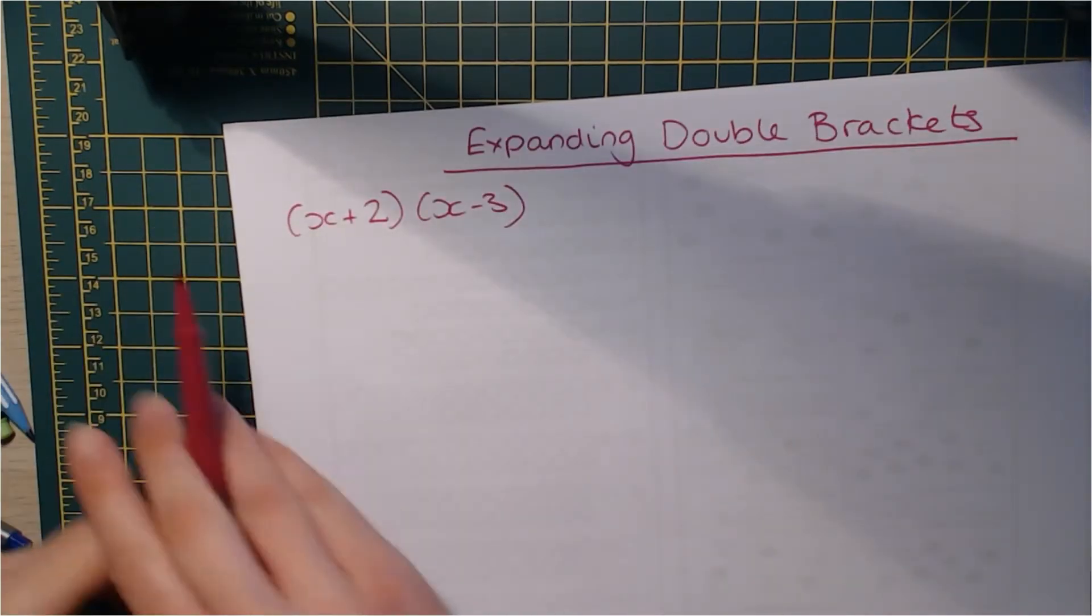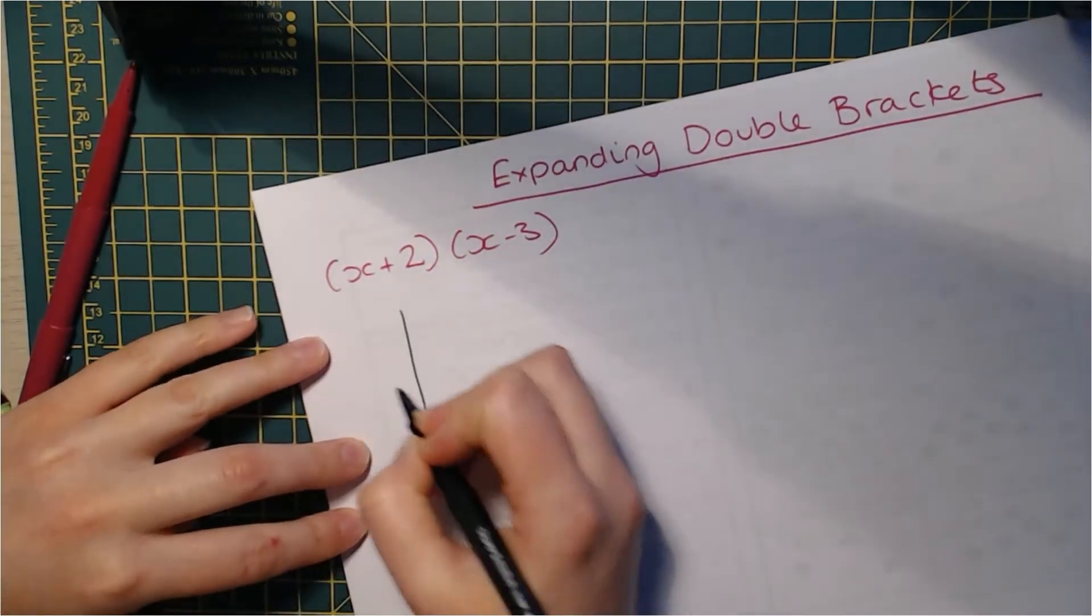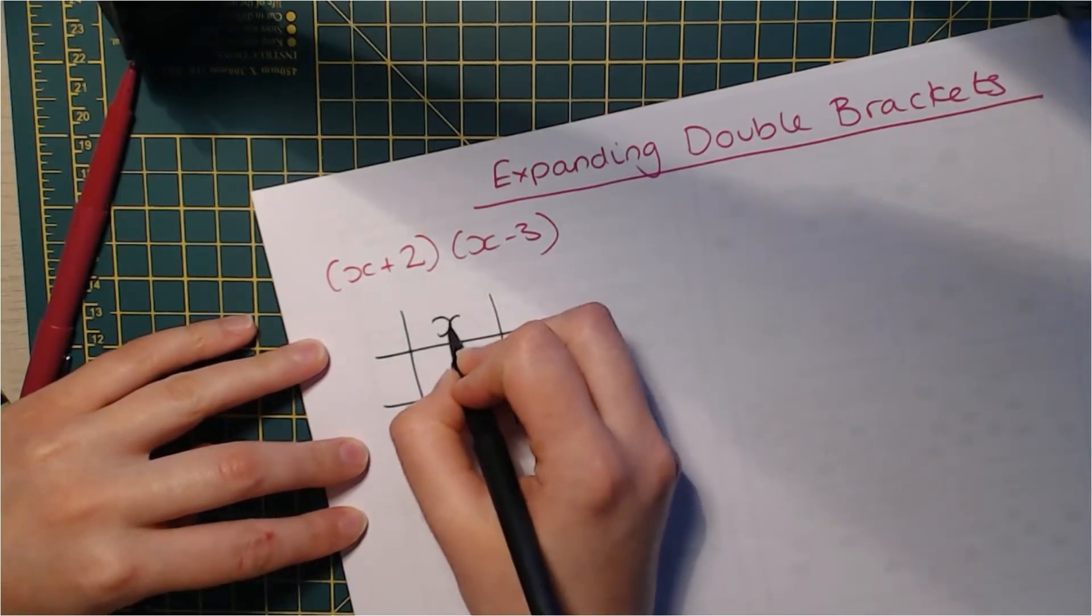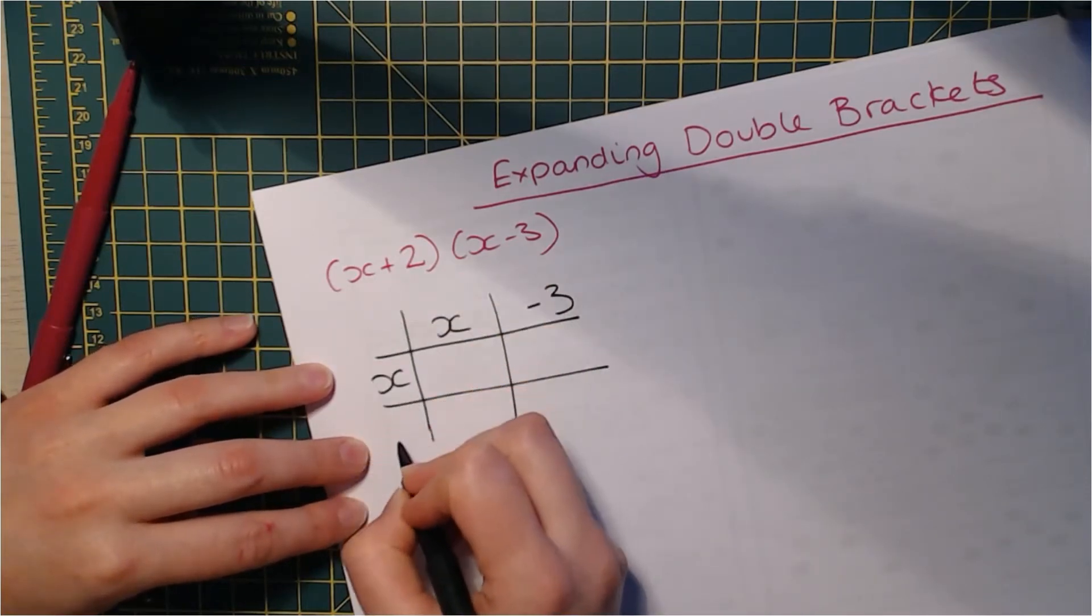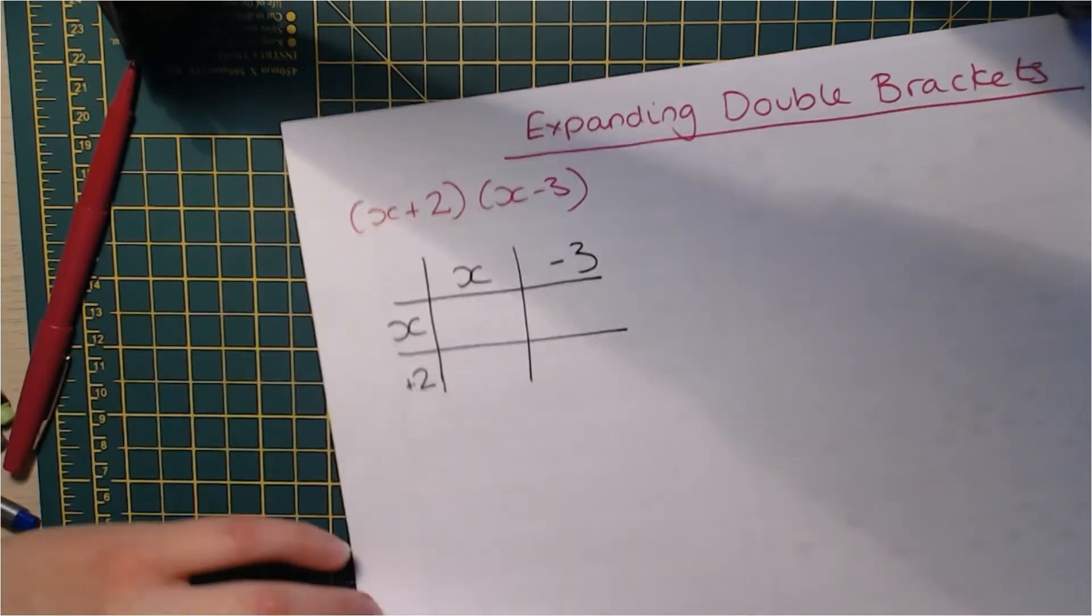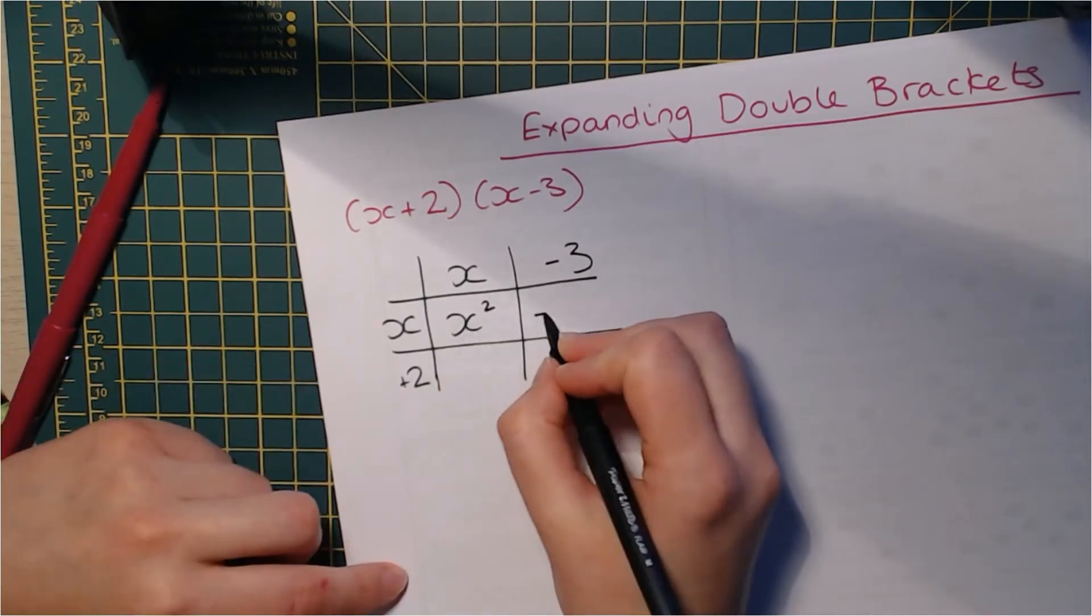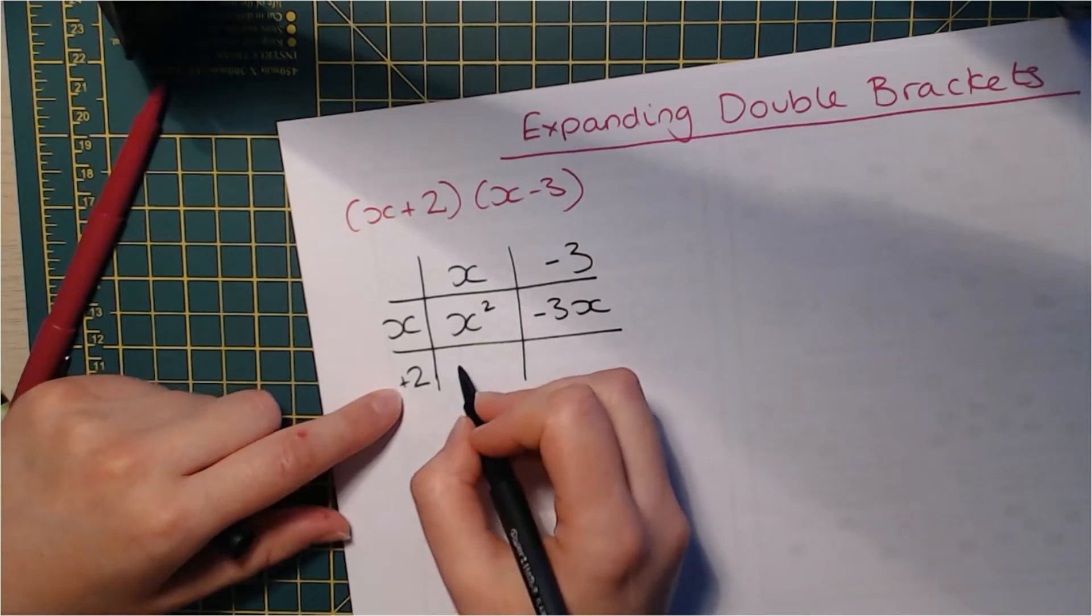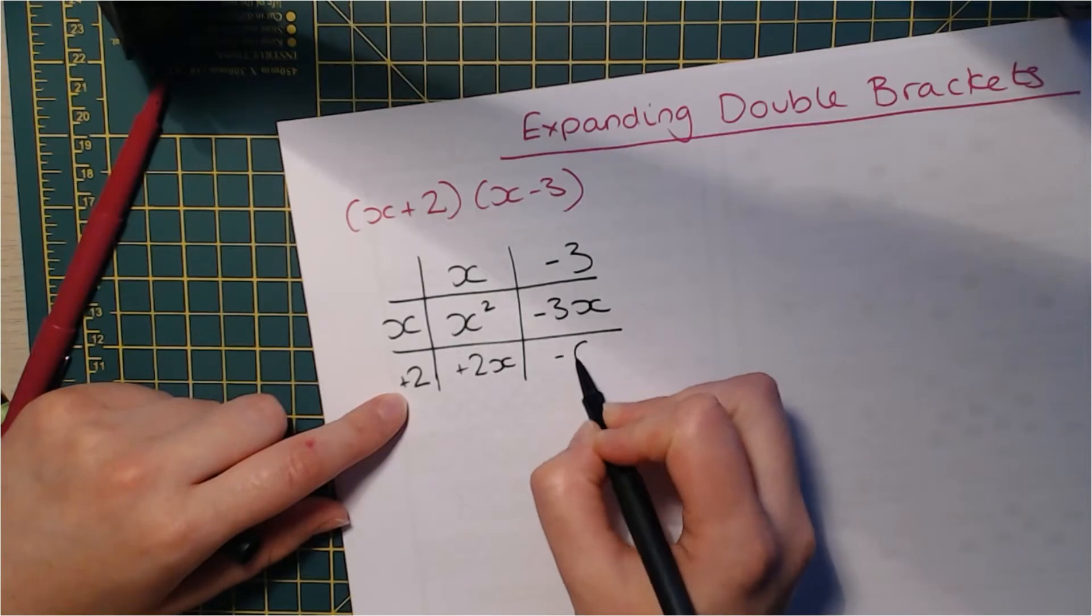Okay, so this one here, we've got a negative involved this time, so keep your eye on that. I'm going to go again with the grid. I'm going to do the second one along the top this time, just so you can see it works either way. x plus 2. Make sure you keep that sign with it, the negative 3. So x multiplied by x is x squared. And with negative 3 multiplied by x is negative 3x. Positive 2x. And negative 3 multiplied by positive 2 is negative 6.